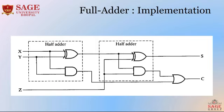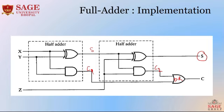This is the full adder implementation. We can implement the full adder using two half adders. The X and Y inputs go to the first half adder, which produces a sum and a carry. The sum output of the first half adder and the third input Z go to the second half adder, which produces the final sum. The carry from the first half adder and the carry from the second half adder are OR-ed together to give the final carry.